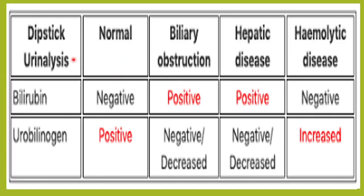On a routine dipstick urinalysis, a normal result shows bilirubin as negative and urobilinogen as positive or normal, since a small amount of urobilinogen is normally present in urine.